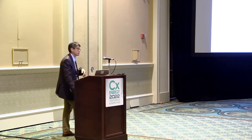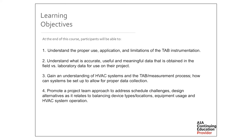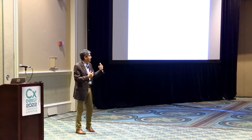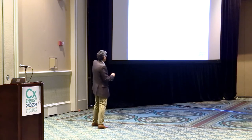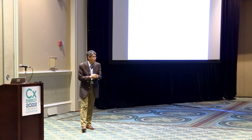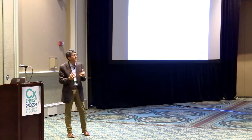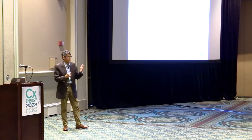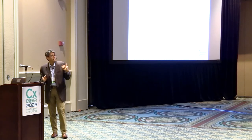On learning objectives: we want to understand the proper use, application, and limitations of TAB instrumentation — there are a lot of misnomers about accuracy and use. We want to understand what's accurate, useful, and meaningful data — field data versus laboratory data. We're also looking at understanding HVAC systems and the TAB measurement process, how to set a system up to get the data we're looking for, and promoting a team approach to address scheduling challenges, design issues, and reviews.